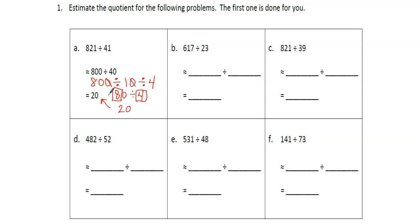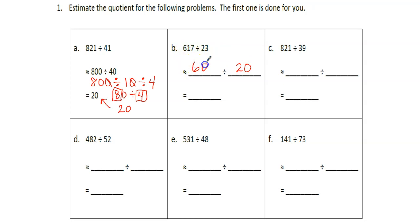I'll probably do that extra step at least for B and C so we can get used to seeing it. First we're going to take our divisor and round it to the nearest 10. We see 23 is around 20, and 617 is around 600. Two tens and six hundreds — they are compatible. That's an easy division problem right there.